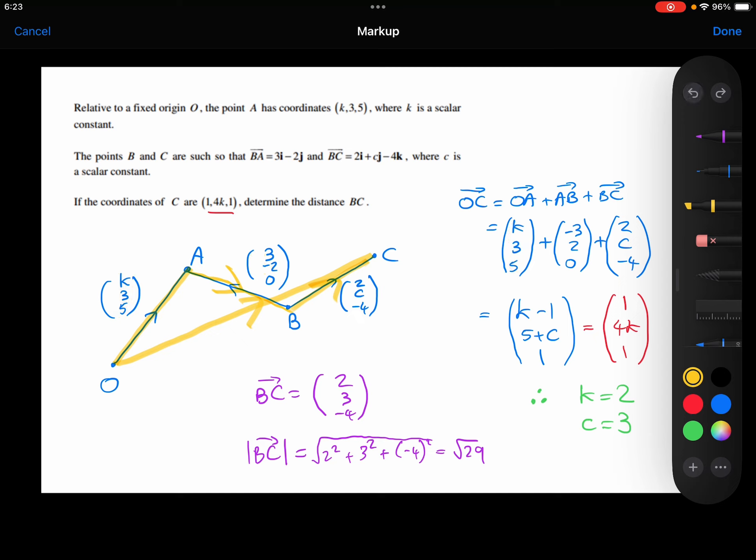Then just simplifying this, so we've got the k minus 3 plus 2, which is k minus 1. We've got the 3 plus 2 plus c, which is 5 plus c. And then we've got the 5 plus 0 plus minus 4, which is 1.